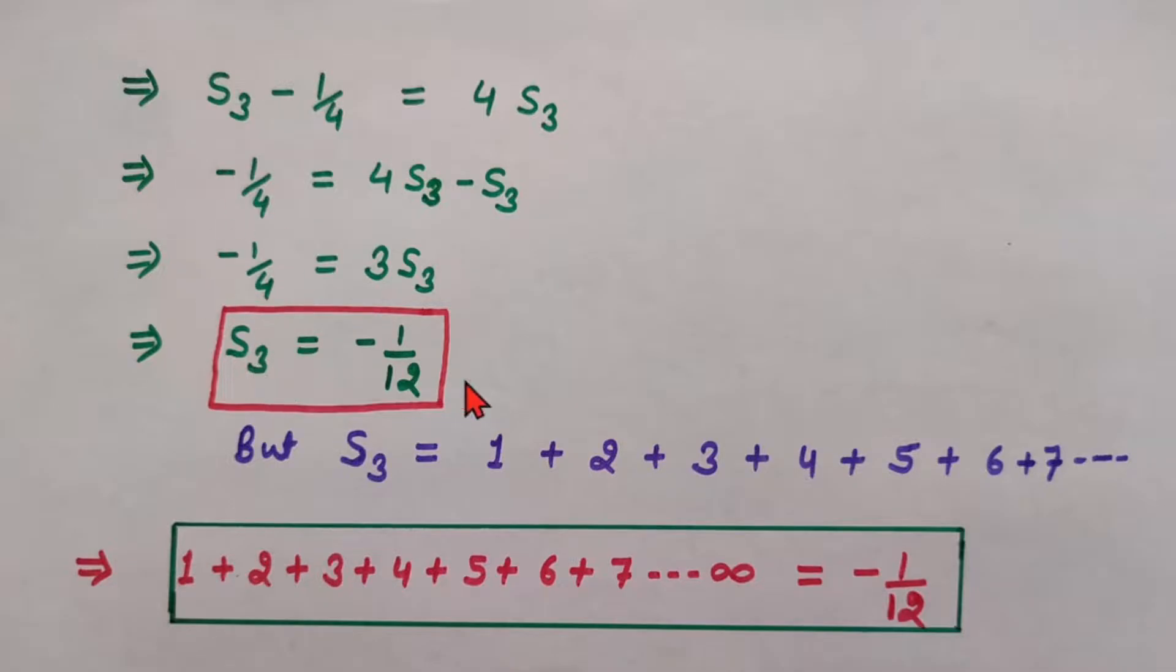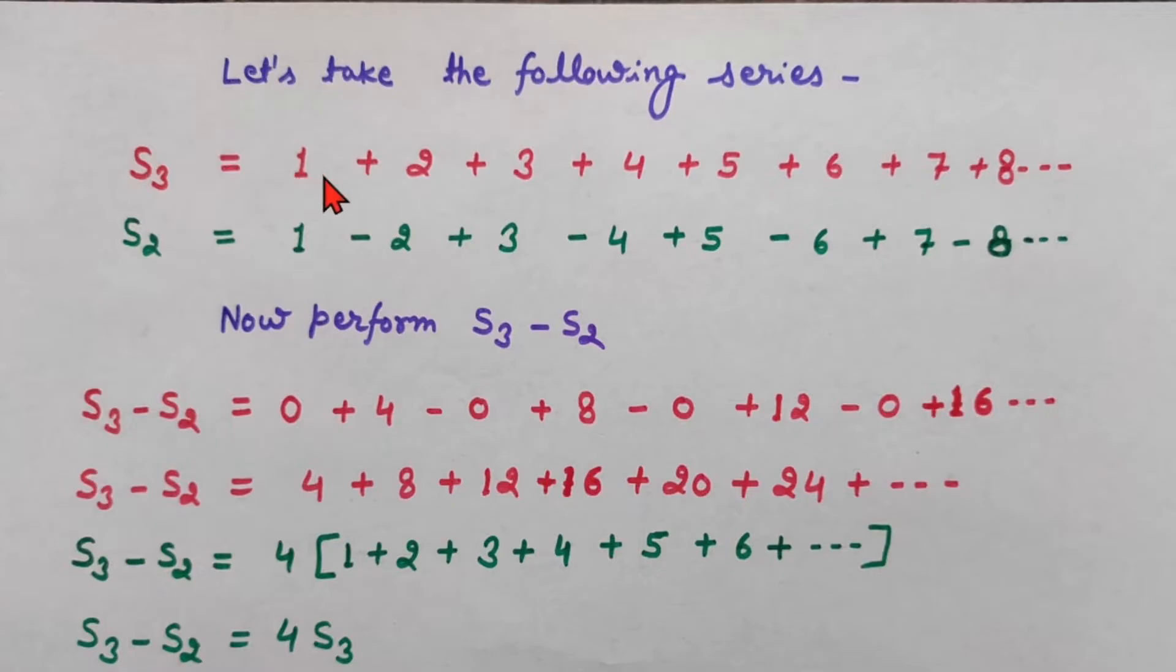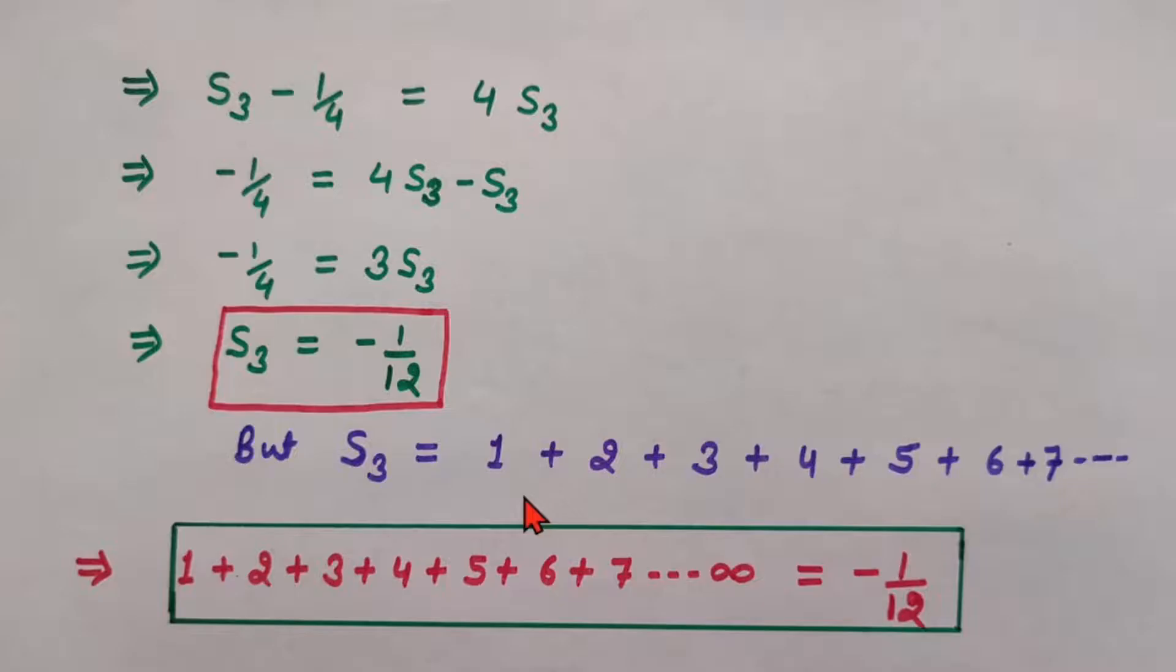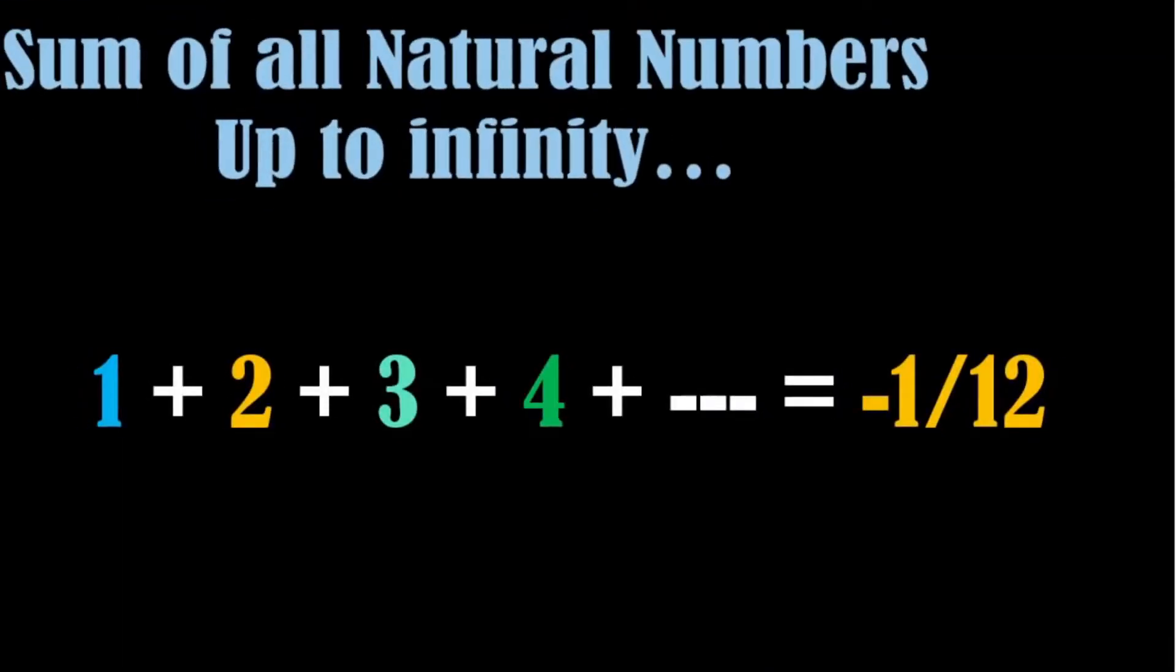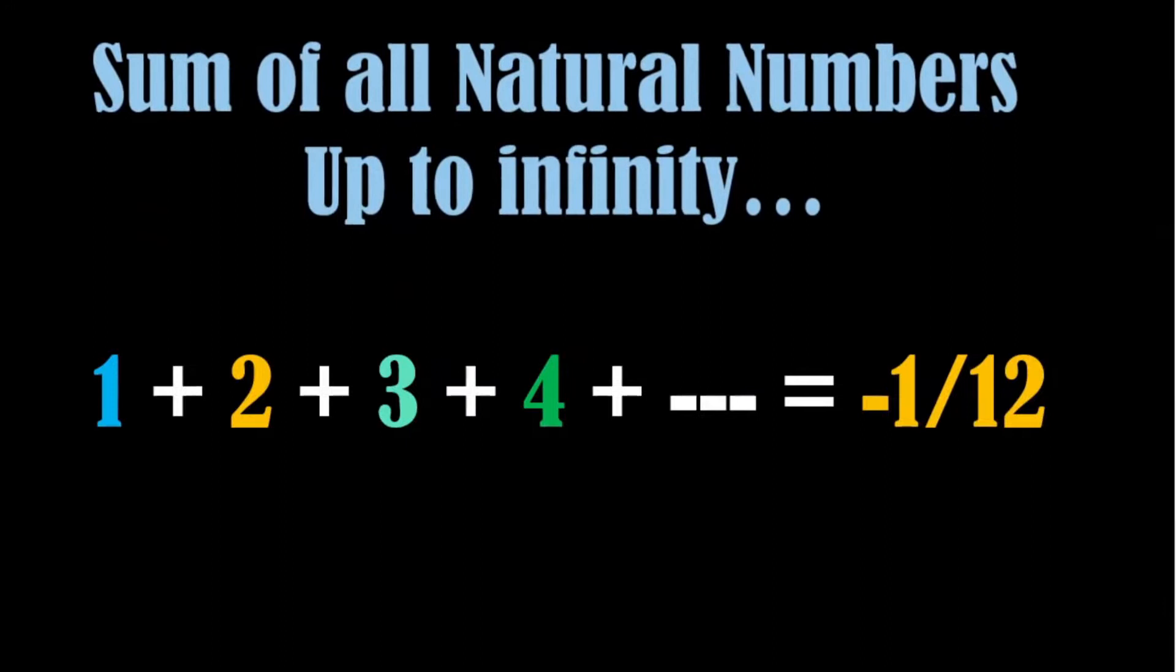But we know S3 was simply what? S3 was summation of all these natural numbers up to infinity. We have got the summation of all the natural numbers up to infinity, which is minus 1 by 12. Hence, we have proved it. So friends, this was the proof of Ramanujan's infinite series of natural numbers.